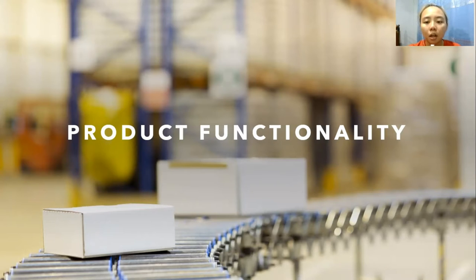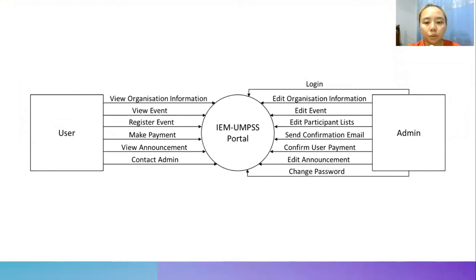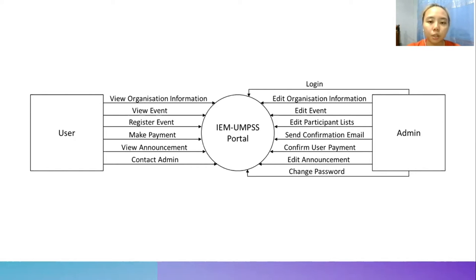Product functionality is based on user perspective and experience while handling the system. The user will view organization information based on the IEM-UMPSS portal, view and register for events, make payment, view announcements, and contact admin. While for the admin, they will log in to the IEM-UMPSS portal, edit organization information, edit events, edit participant list, send confirmation email to the user, confirm user payment for paid events, edit announcements, and change password.